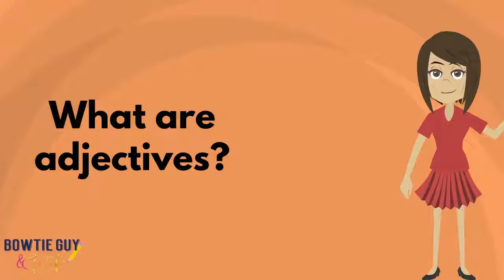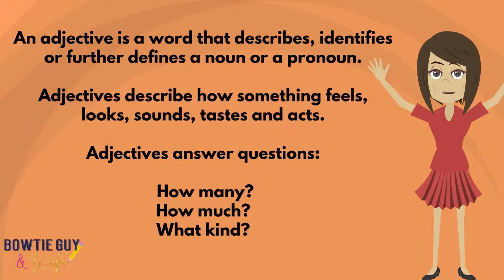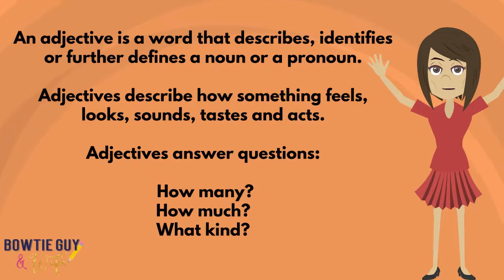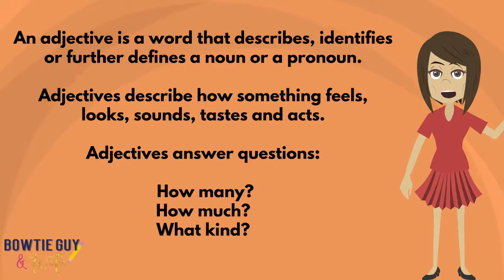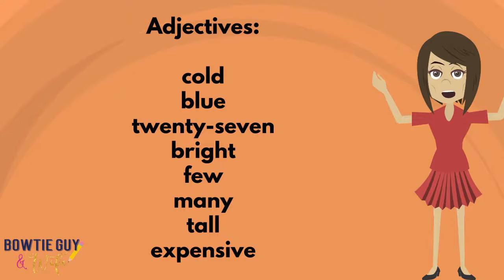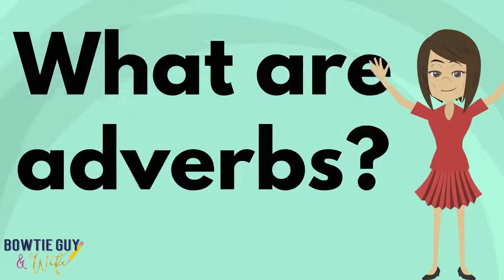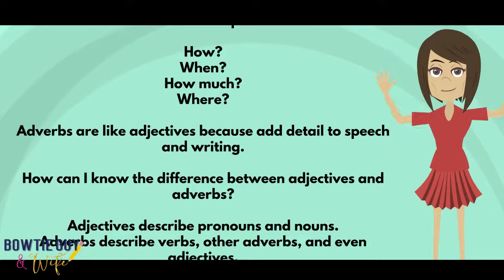What are adjectives? An adjective is a word that describes, identifies, or further defines a noun or a pronoun. Adjectives describe how something feels, looks, sounds, tastes, and acts. Adjectives answer questions like how many, how much, or what kind. Adjectives are words like cold, blue, 27, bright, few, many, tall, or expensive. Adjectives answer questions like how, when, how much, and where.